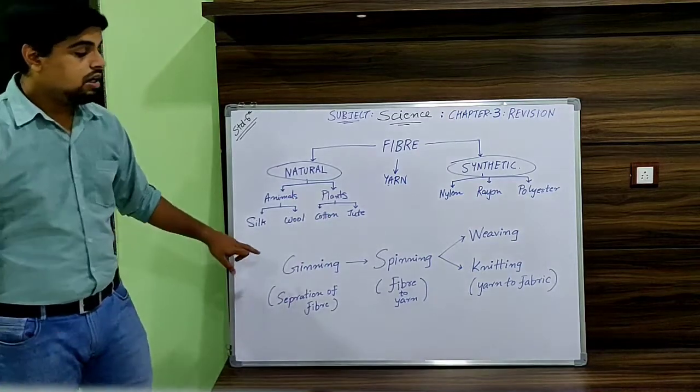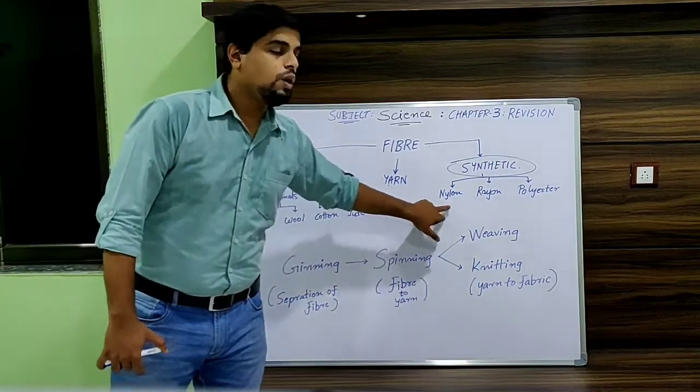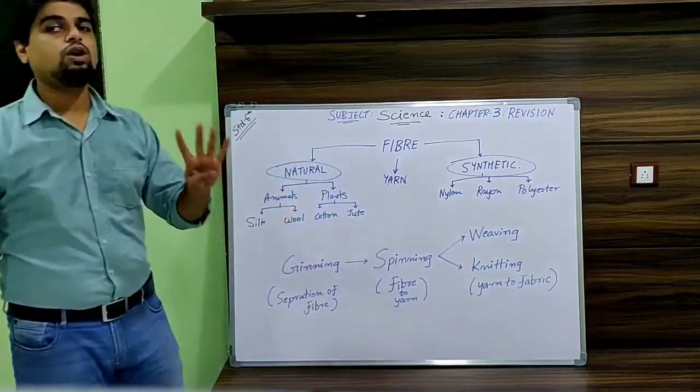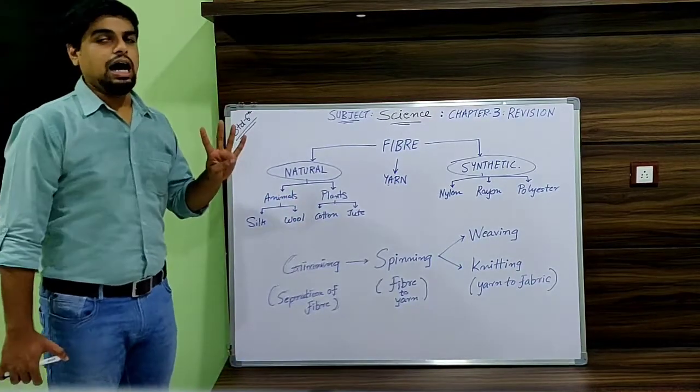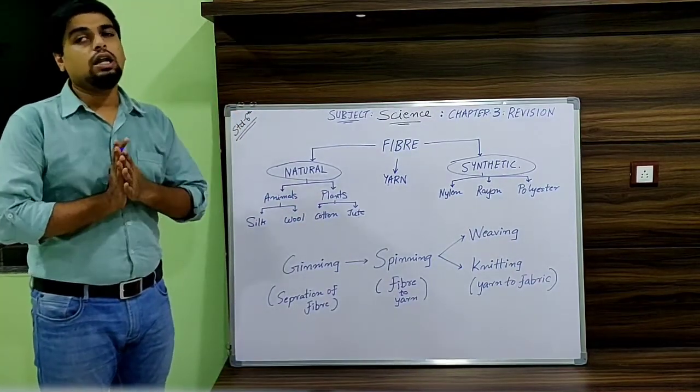After that we have learnt gaining, spinning, weaving and knitting. These four main processes are explained in this particular chapter.